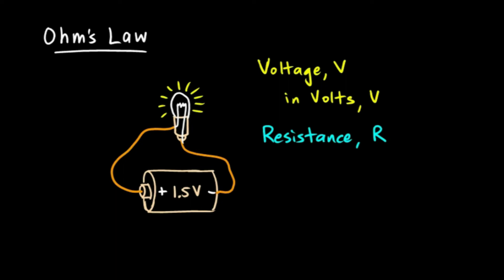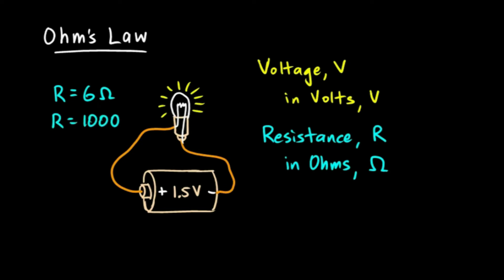The resistance to current flow in this circuit primarily comes from the bulb. Anything you put into the circuit — a light bulb, a heater, a toaster — has some electrical resistance. Resistance is measured in ohms, O-H-M-S. The symbol for ohms is the Greek letter omega, the last letter of the Greek alphabet, which looks kind of like a horseshoe. So you might say the resistance equals six ohms, or the resistance equals a thousand ohms.